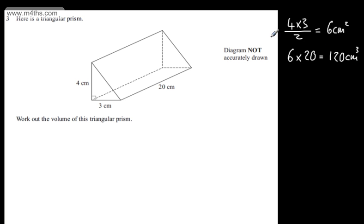All I've done is found the area of the cross-section, 4 times by 3 divided by 2, then multiplied it by the length here, and given the correct units.